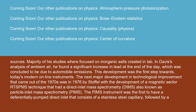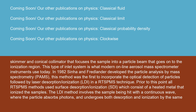The next major development in the 1970s was in 1976 by Stoffel, with the development of a magnetic sector RTSB-MS technique that had a direct inlet mass spectrometry (DIMS), also known as particle inlet mass spectrometry (PMS). The PMS instrument was the first to have a differentially pumped direct inlet that consists of a stainless steel capillary, followed by a skimmer and conical collimator that focuses the sample into a particle beam that goes on to the ionization region. This type of inlet system is what modern online aerosol mass spectrometer instruments use today.